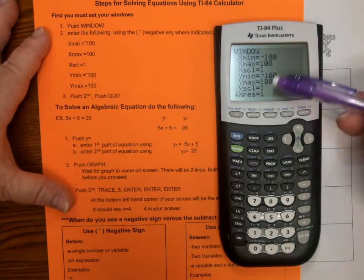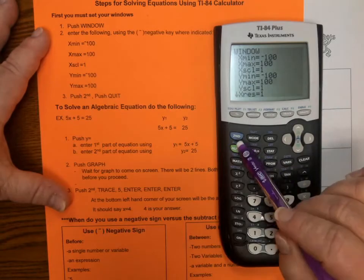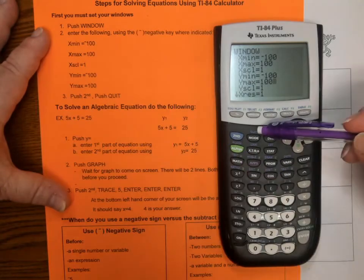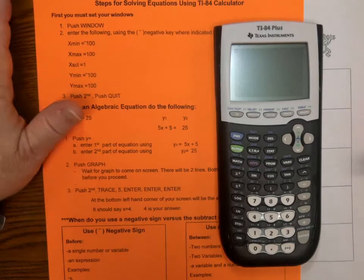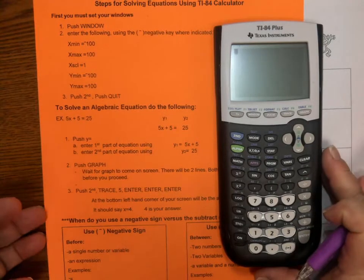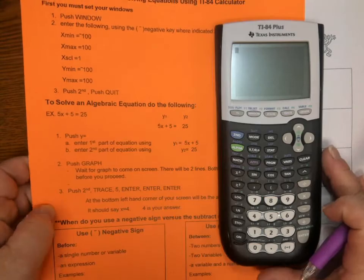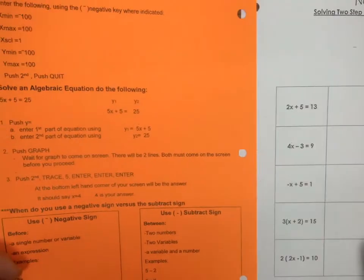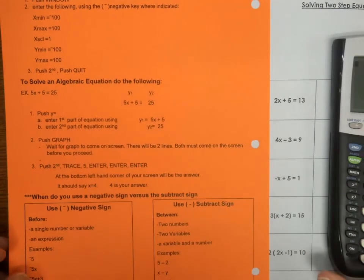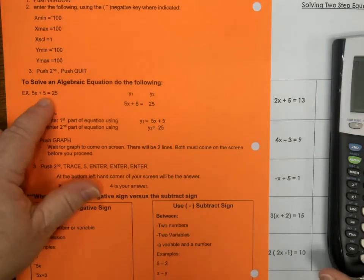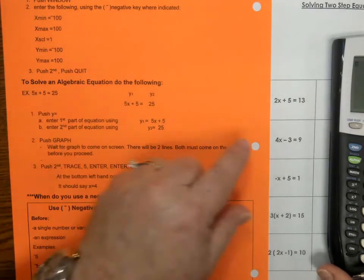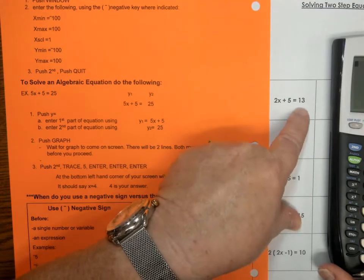Then to get off of this screen, you're going to hit the second and then the blue quit. So, second and quit which is your mode key to get off. Alright, to solve an algebraic equation, do the following. Here are my notes. Here is my equation right here.